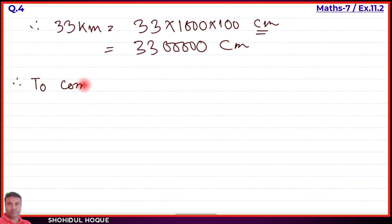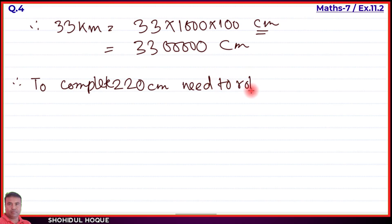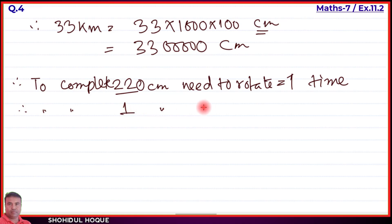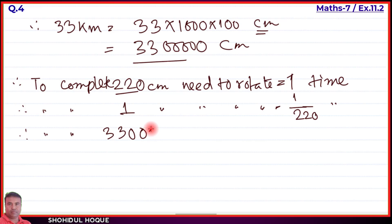To complete 220 centimeter circumference, the wheel needs to rotate one time. So to cover 3,300,000 centimeter, we divide the total distance by the circumference: number of rotations equals 3,300,000 divided by 220.